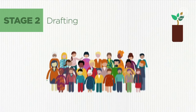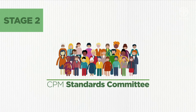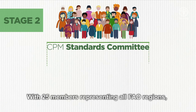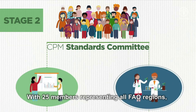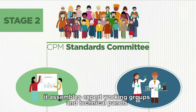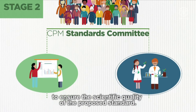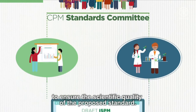The CPM Standards Committee oversees the new standards development. With 25 members representing all FAO regions, it assembles expert working groups and technical panels to ensure the scientific quality of the proposed standard.